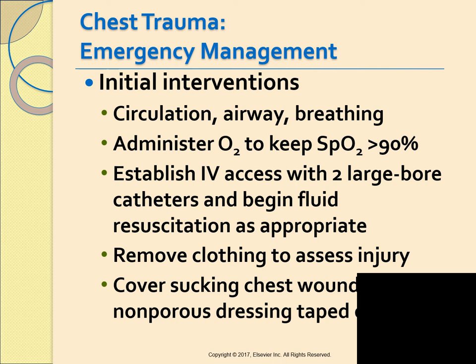Initial interventions for anyone with chest trauma: if they are unresponsive, assess circulation, airway, and breathing. If responsive, monitor airway, breathing, and circulation. Ensure a patent airway and give high-flow oxygen to keep SpO2 above 90. Establish IV access with two large-bore catheters and begin fluid resuscitation as appropriate. Remove clothing to assess the injury — in the ER they'll cut the shirt right off. Cover any sucking chest wound with a non-porous dressing taped on three sides.